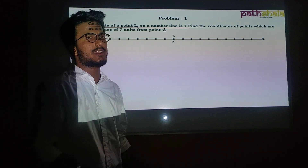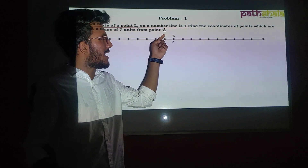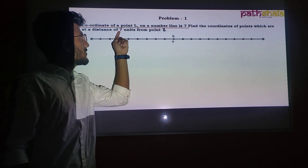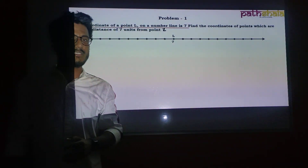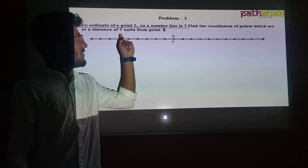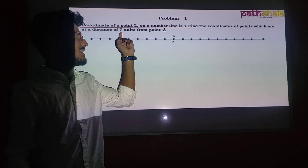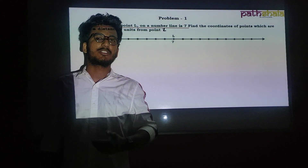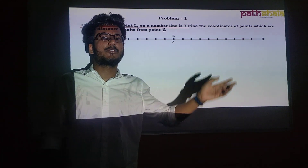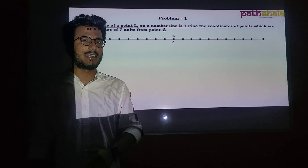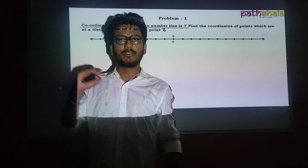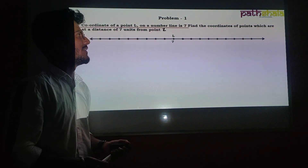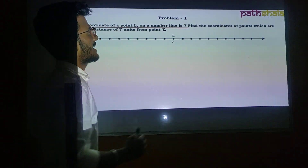A point 7 units away from L could be on the right side (positive direction) or on the left side (negative direction) — both cases are possible. Let's take them one by one. If we go towards the positive side, we travel 7 units from L.